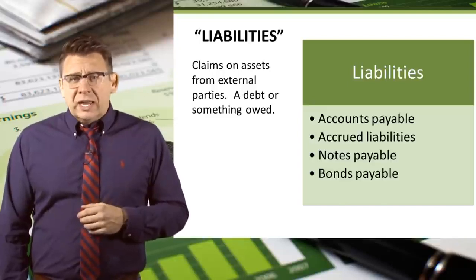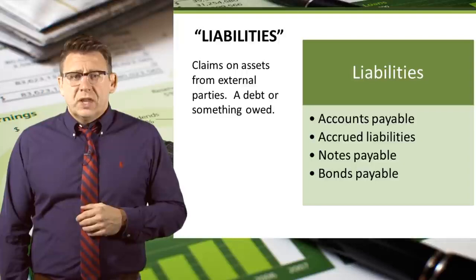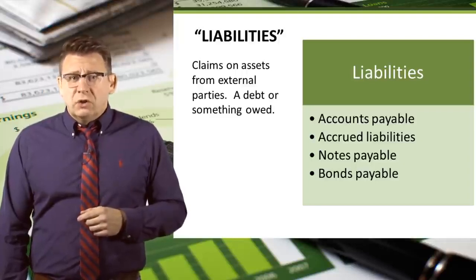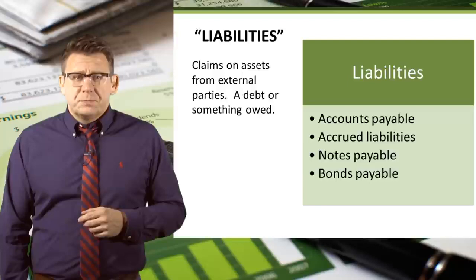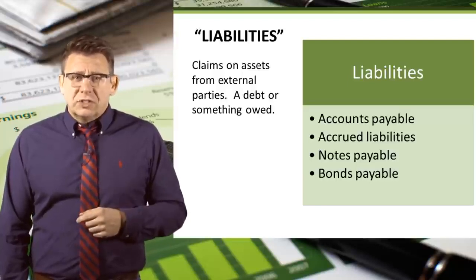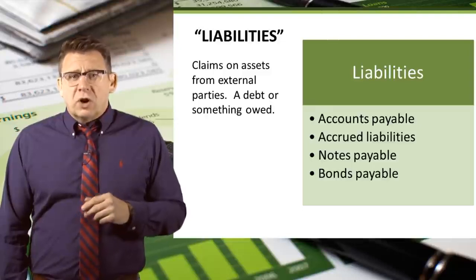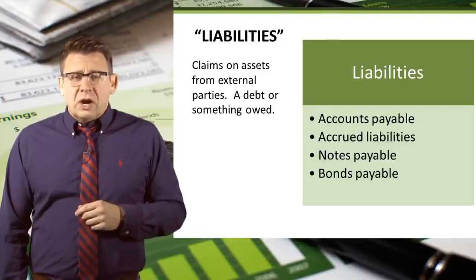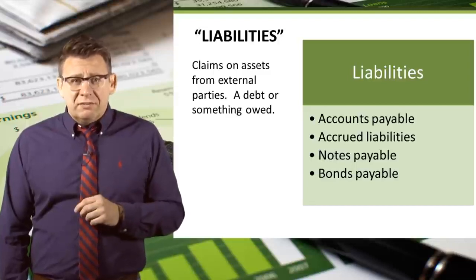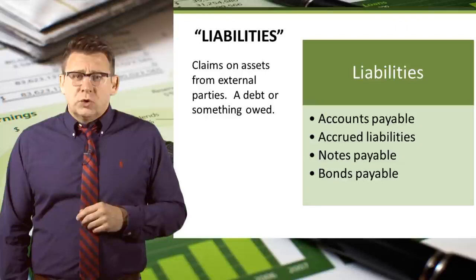Liabilities are claims on our assets from external parties like creditors. Accounts payable is for money that we owe to our vendors or suppliers. Accrued liabilities, sometimes called accrued expenses, are amounts that we owe for our bills related to our operations. For example, utility bills received but not yet paid is a type of accrued liability.